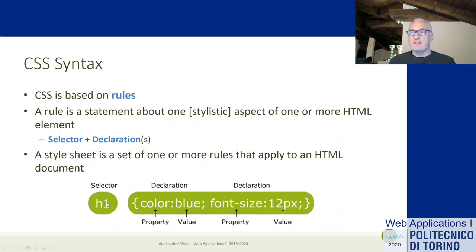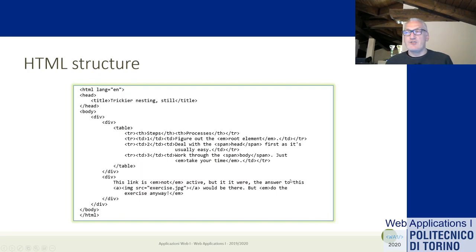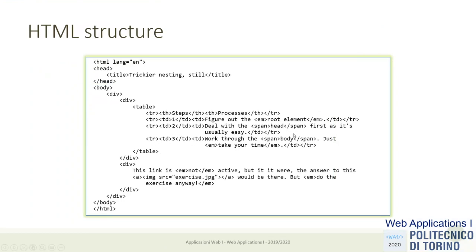The syntax is very easy: one rule per line - selector, then curly braces, and the declarations inside. To understand how it works, let's look at a very simple HTML page. We see that there are two divs, one table, table rows, table headings, table data inside four table rows, and another div at the bottom that contains a link - and the link contains an image. There are also some emphasis elements here and there.